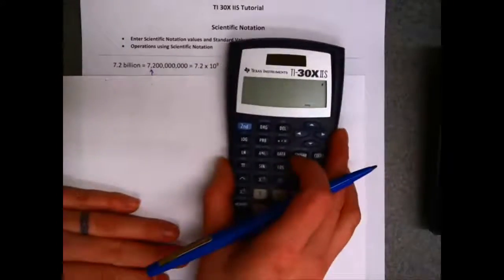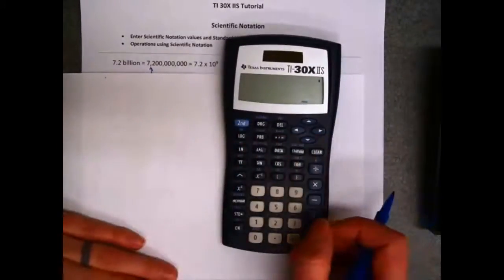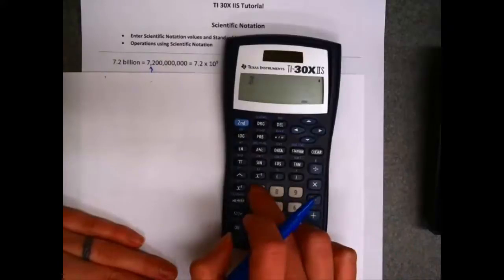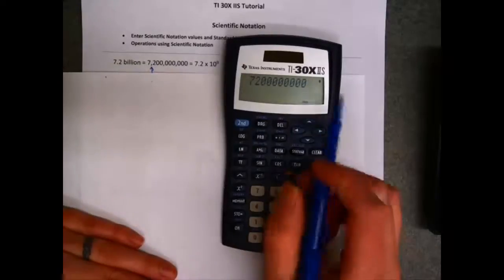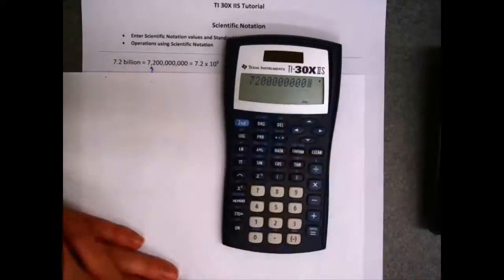So how can a calculator help me with that? Well, first let me type the number in as a standard number. I'd have to carefully count out all my zeros. 7, 2, 1, 2, 1, 2, 3, 1, 2, 3. Then I might even have to check to make sure I have the right number.